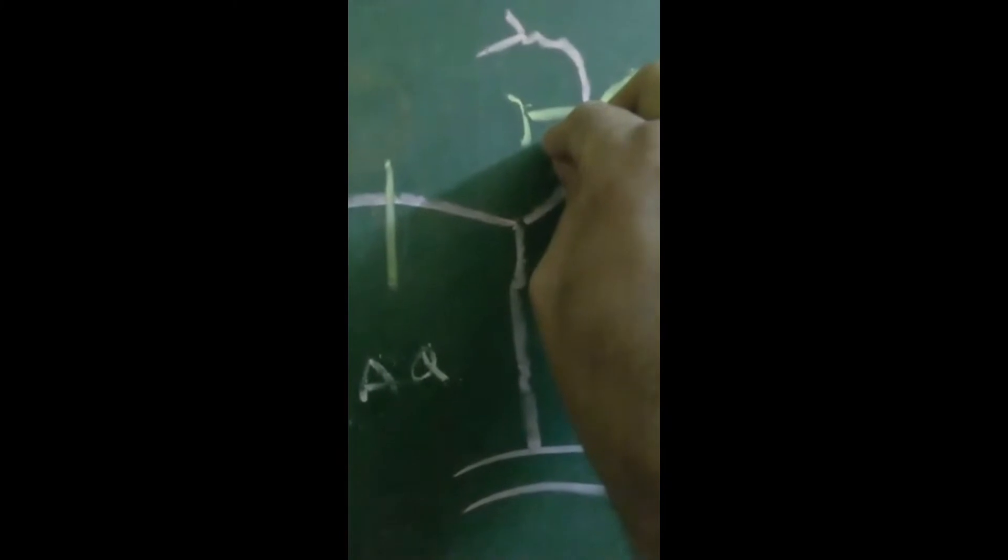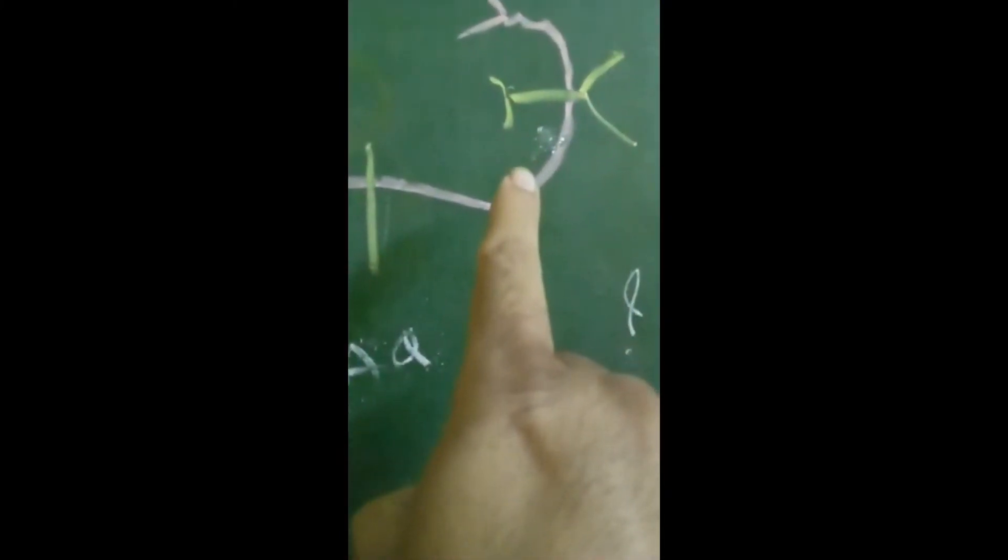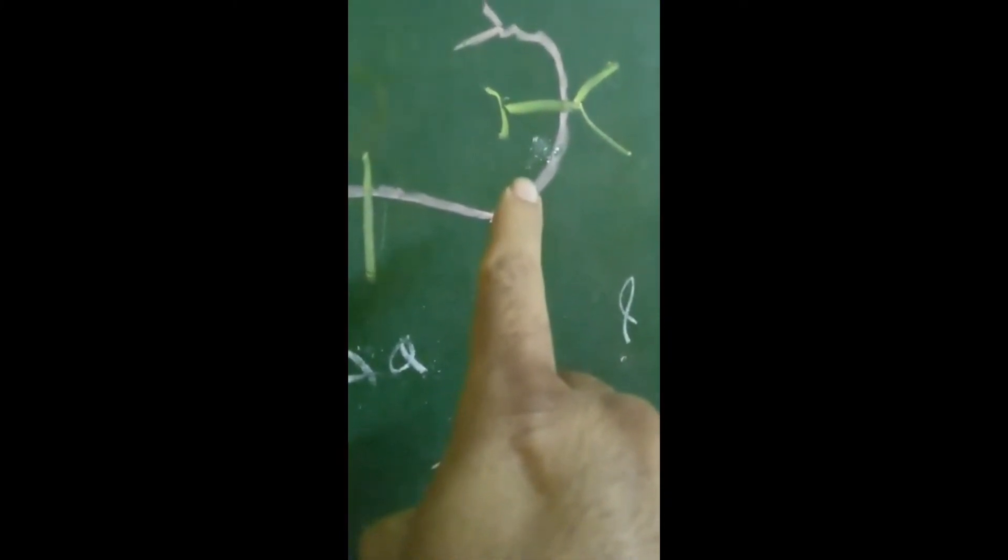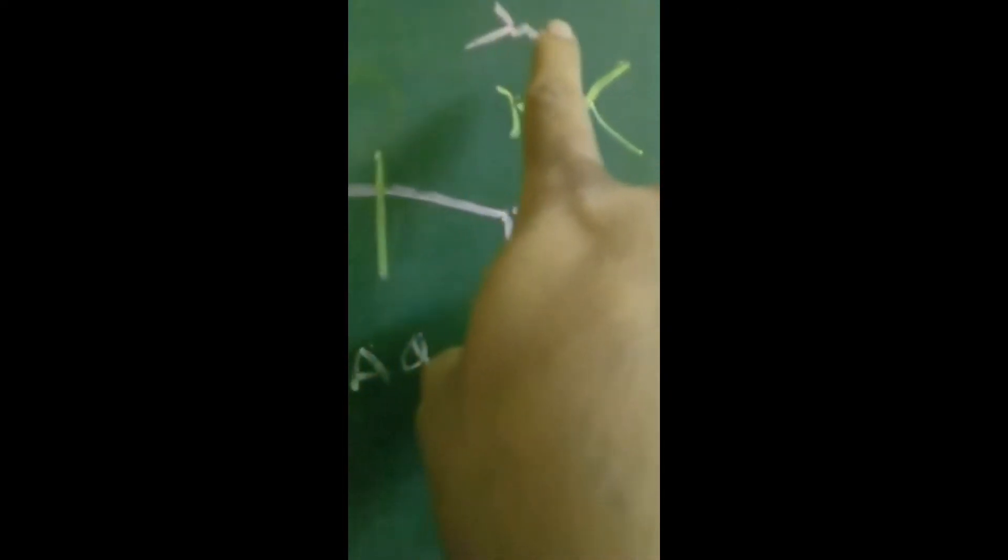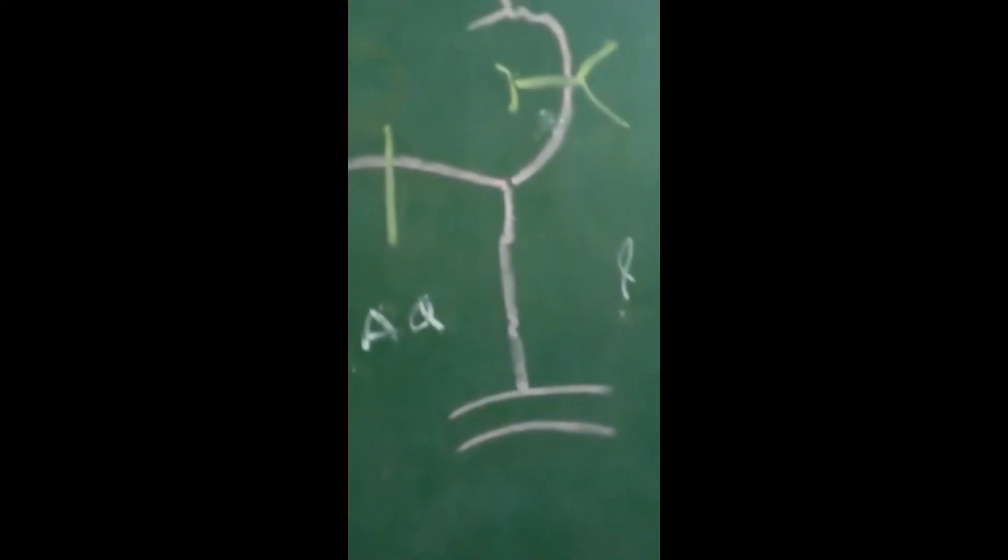Pterion gives passage to the anterior branch of middle meningeal artery. Look at these key points: anterior branch, pterion. These words must be written - anterior branch pterion.